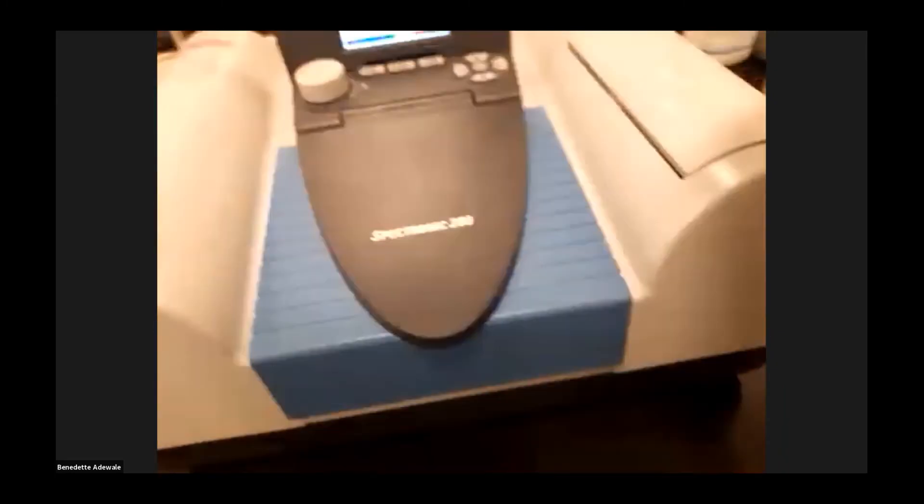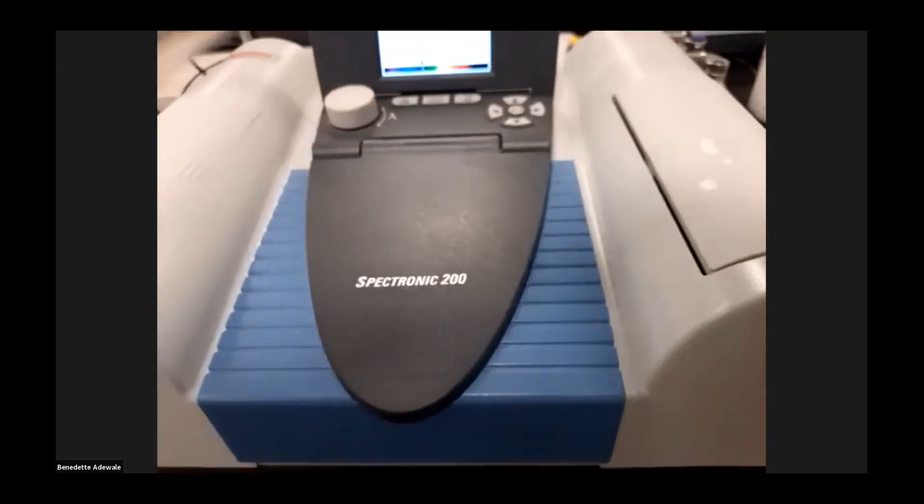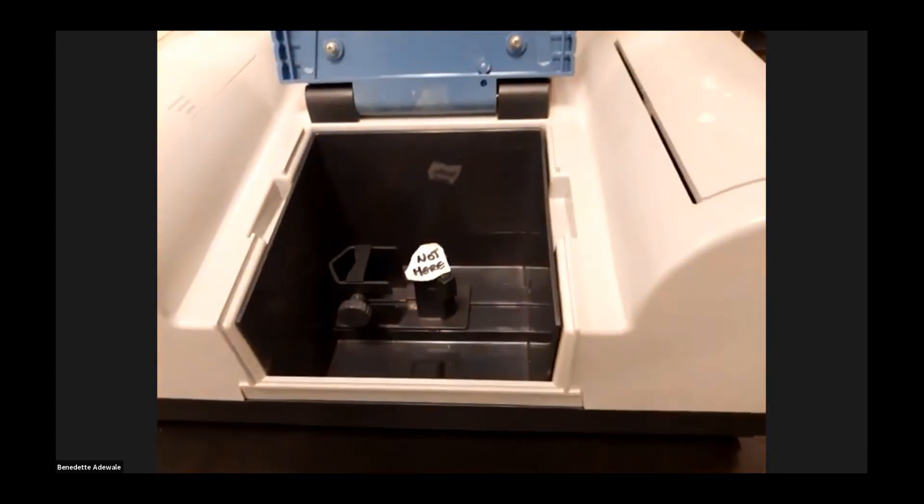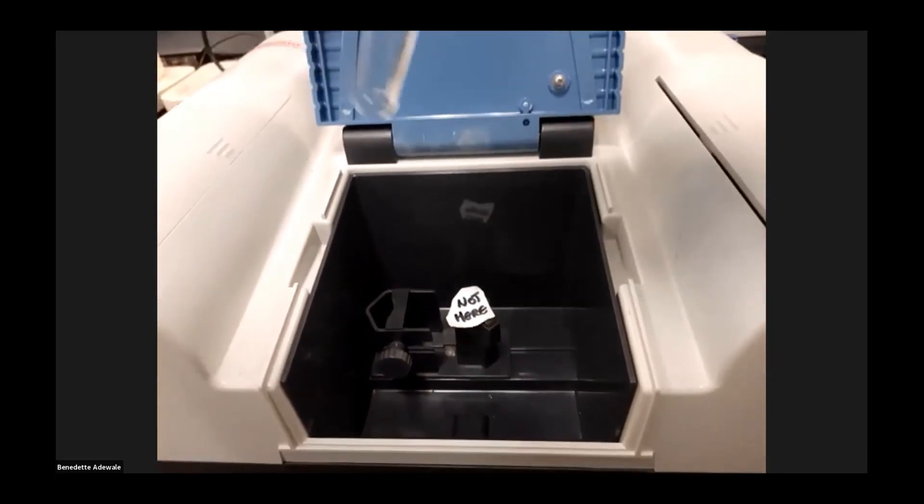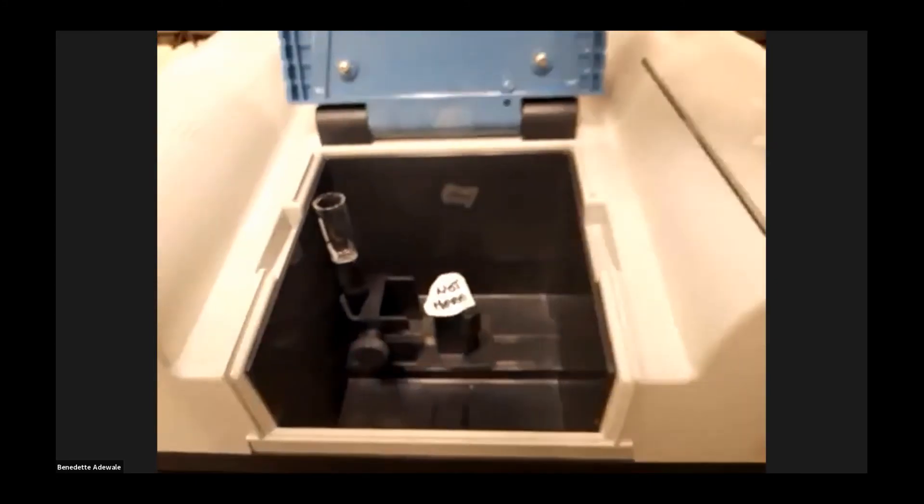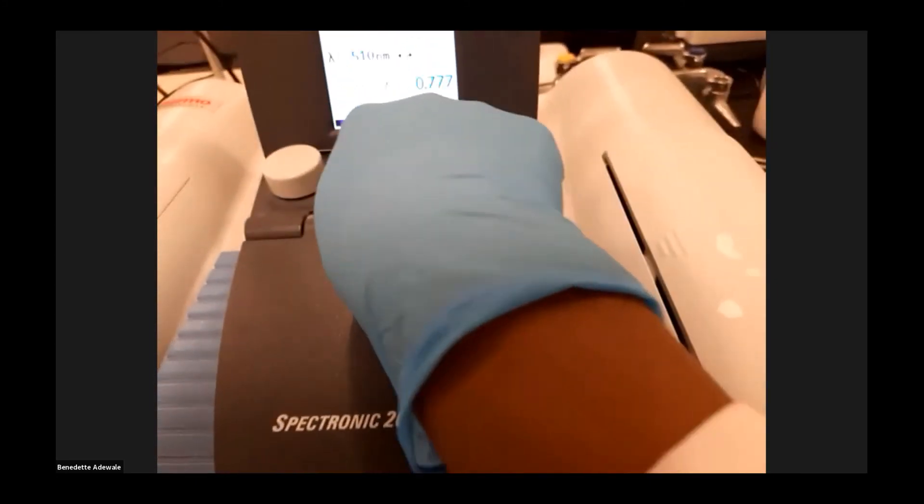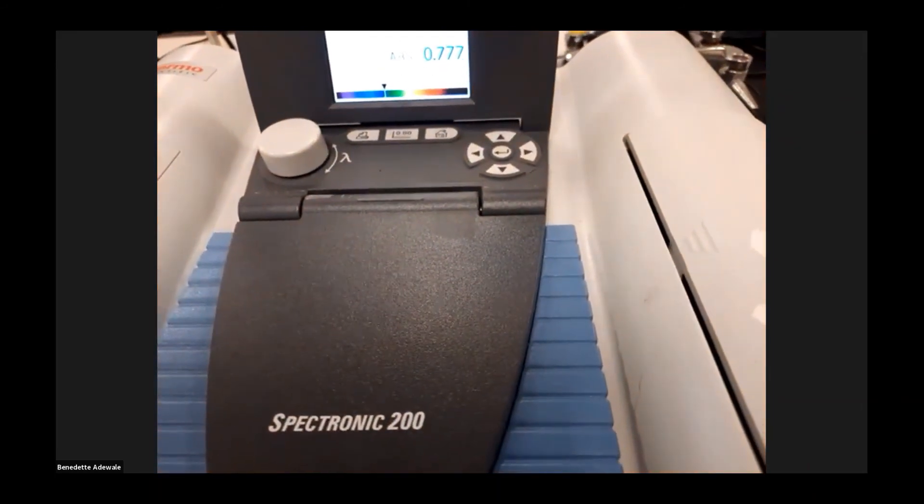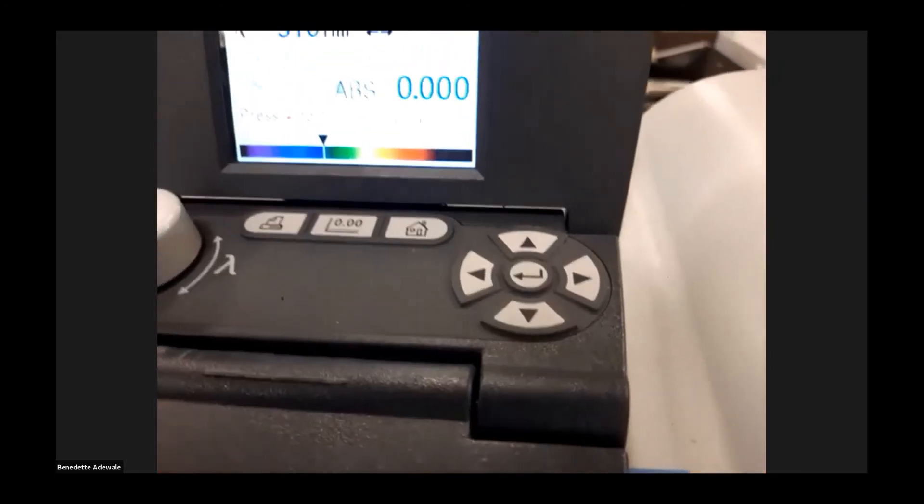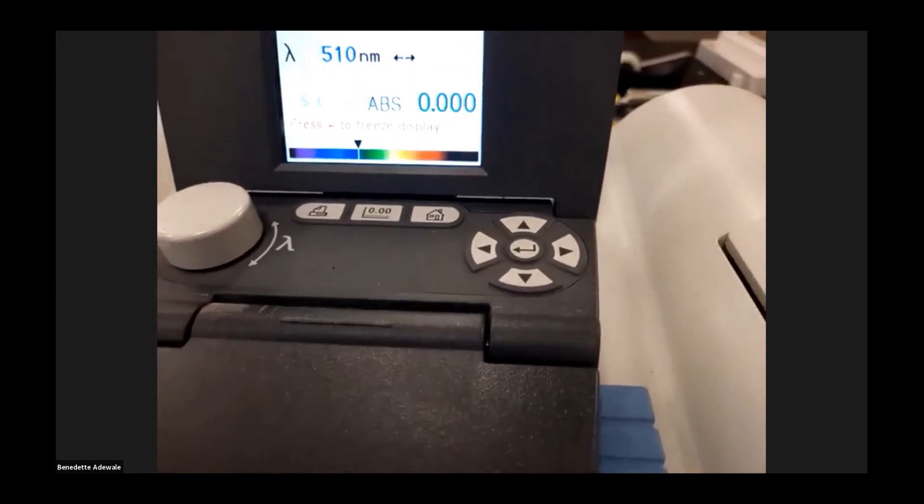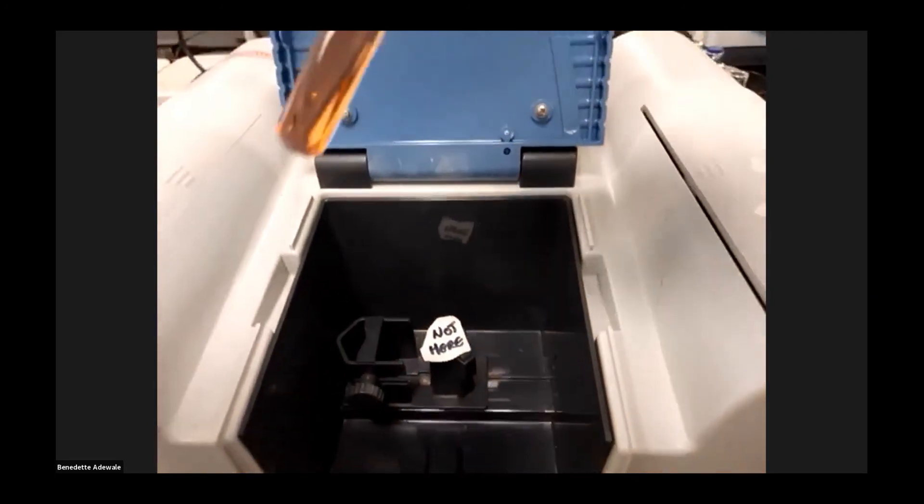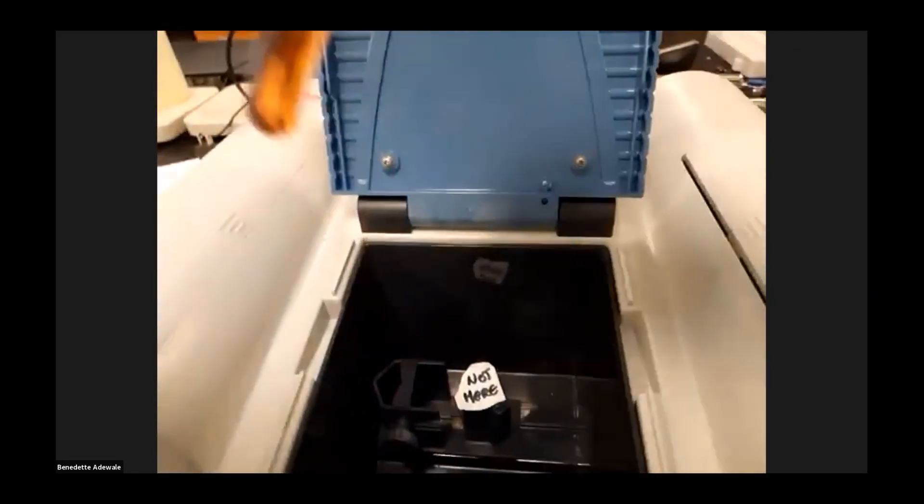A blank solution is going to be provided for you for calibration. Open the sample compartment. Make sure in the sample compartment, the samples go on the left-hand side. In order to zero it, you press the middle button zero. Make sure you remove the blank sample. Then you can now take the absorbance of each of your solutions.